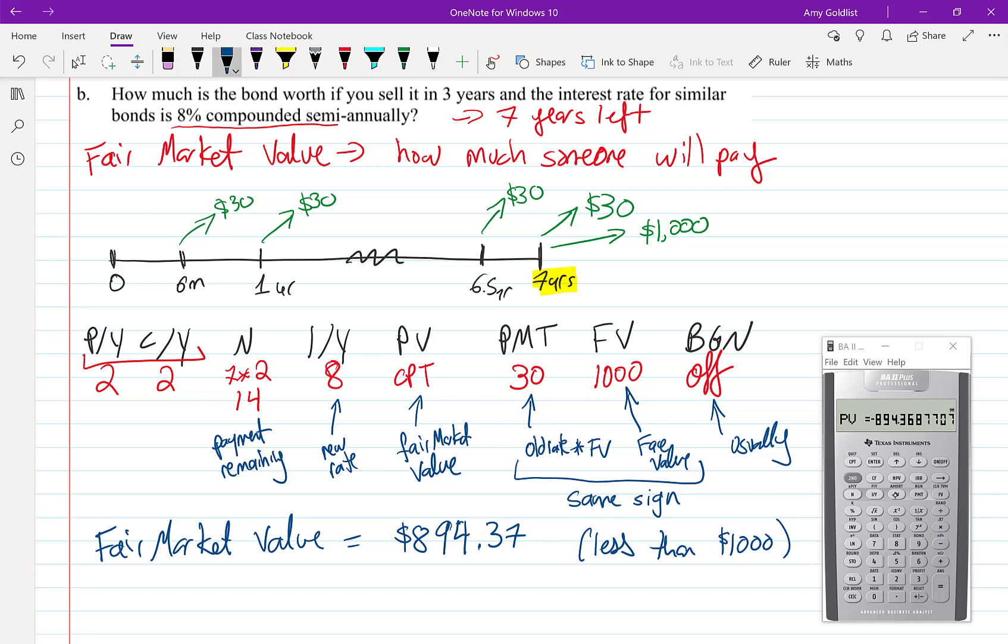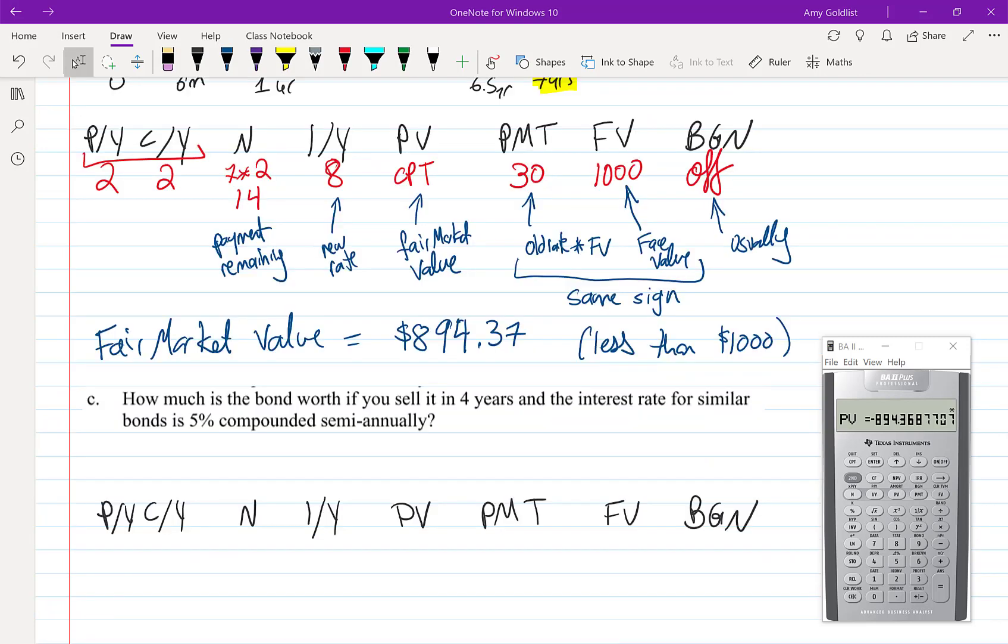Let's try one more. How much is the bond worth if you sell it in four years and the interest rate for similar bonds is 5% compounded semi-annually? That means anybody buying a similar bond...